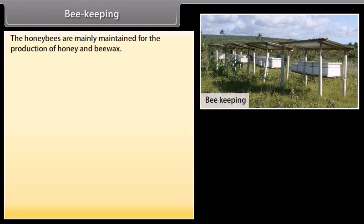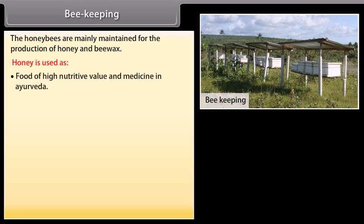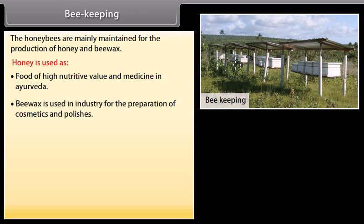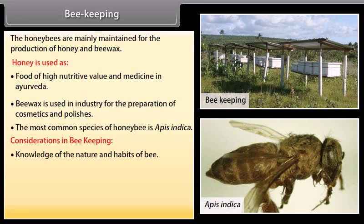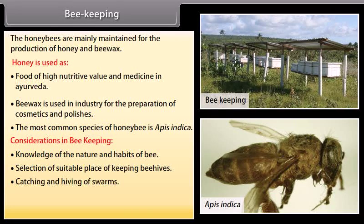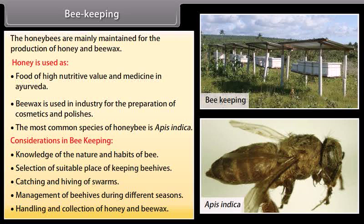Honeybees are mainly maintained for the production of honey and bee wax. Honey is used as food of high nutritive value and in medicine in Ayurveda. Bee wax is used in industry for the preparation of cosmetics and polishes. The most common species is Apis indica. Considerations in beekeeping include: knowledge of the nature and habits of bees, selection of suitable place for beehives, catching and hiving of swarms, management of beehives during different seasons, and handling and collection of honey and bee wax.